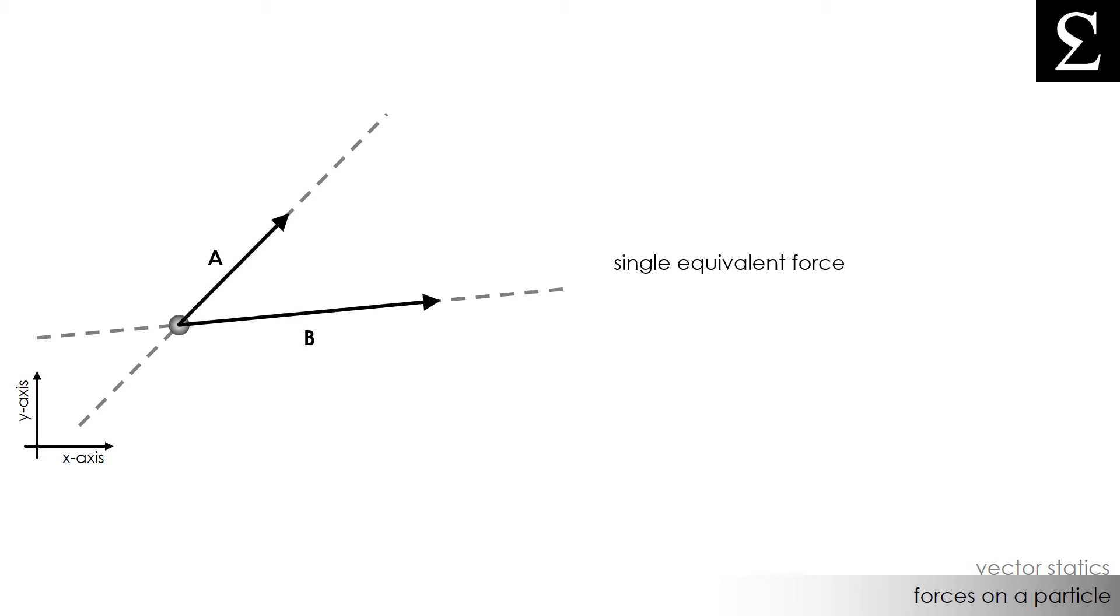Graphically, we can find this resultant force by applying the parallelogram law, which states that the vector forces on a plane can be drawn in a tip-to-tail fashion to produce the resultant force C, which acts on the particle.